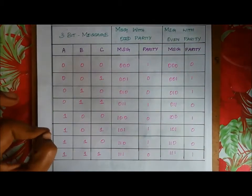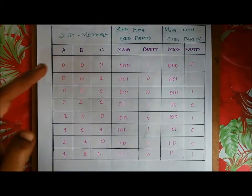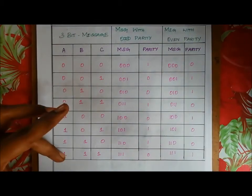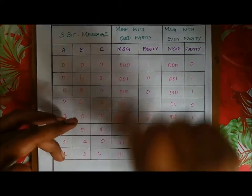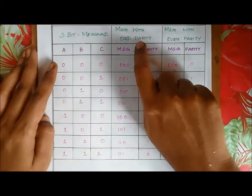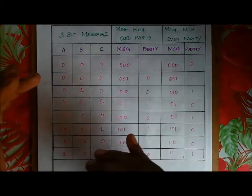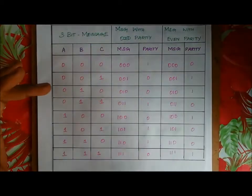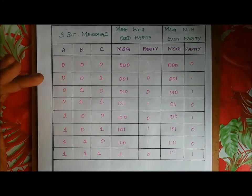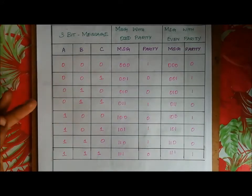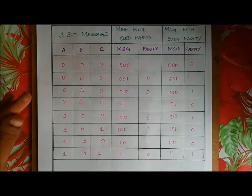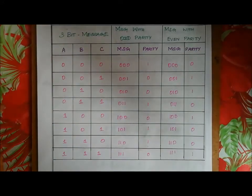For the three-bit message A, B, C — we have values from triple 0 to triple 1. For odd parity, the total number of 1s should be odd. For even parity, the total number of 1s should be even.